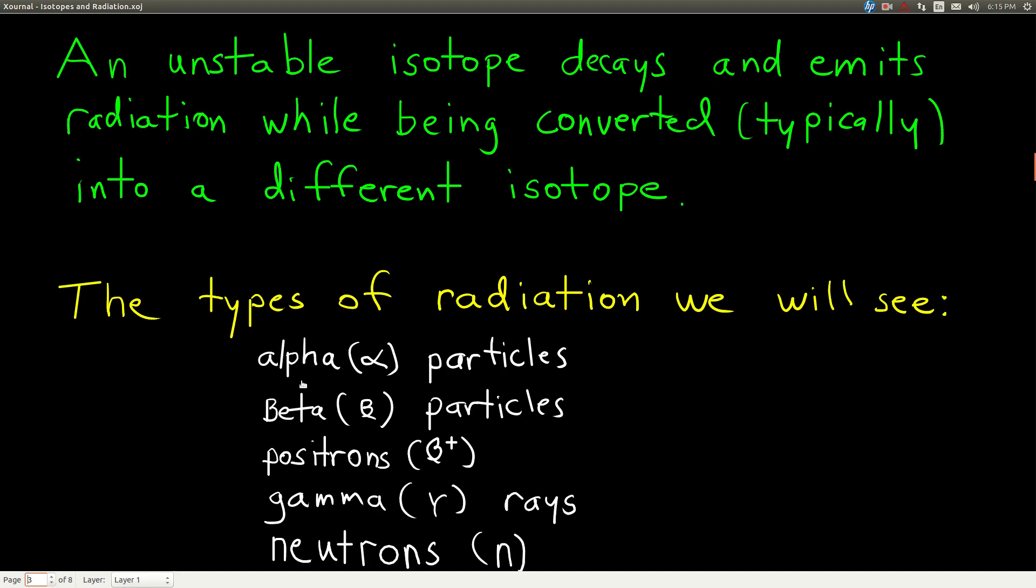So an unstable isotope generally decays, and when it does, it emits radiation, and as it does that, it's converted into a different isotope, one that's more stable than it was before it decayed.